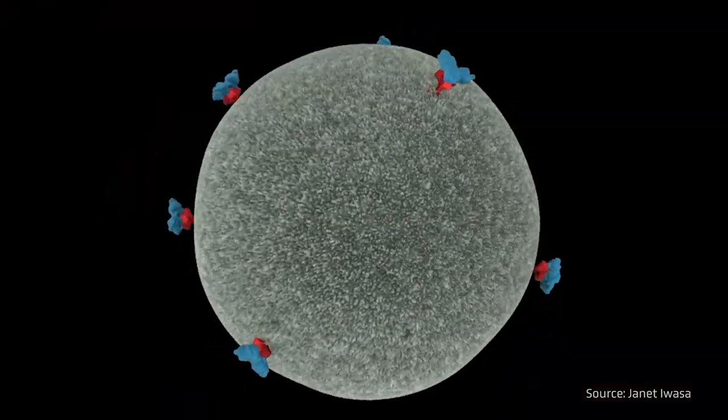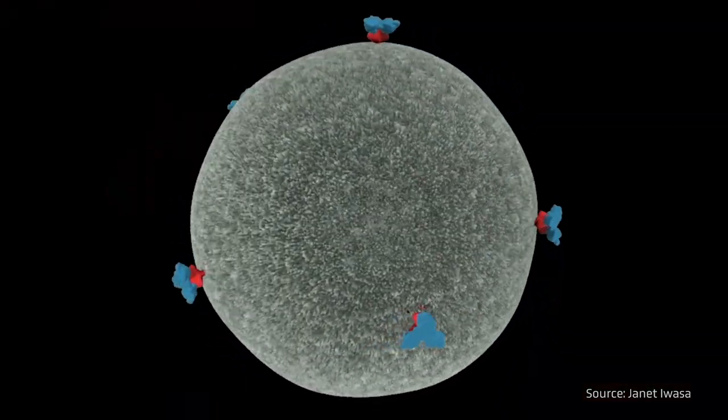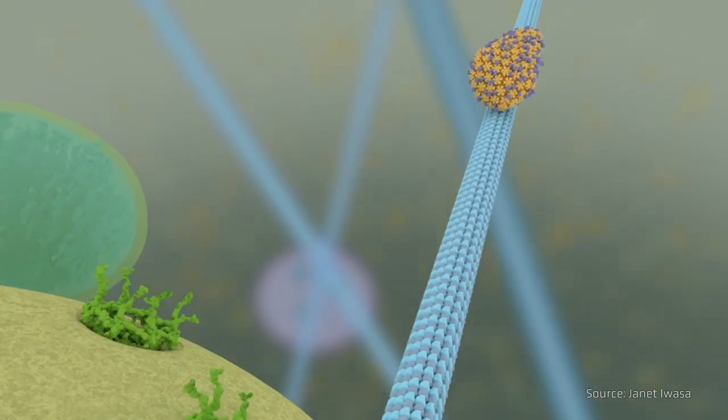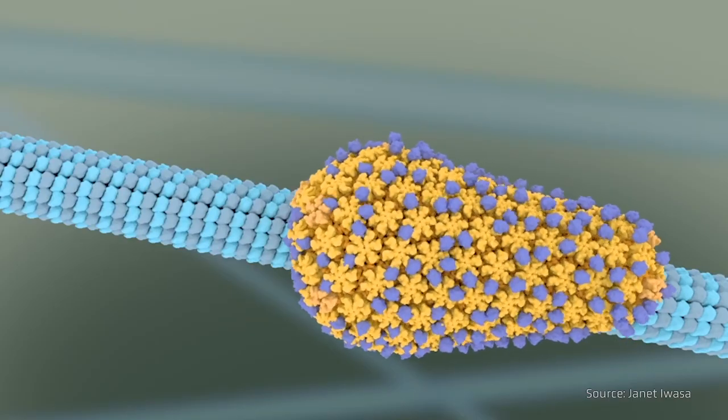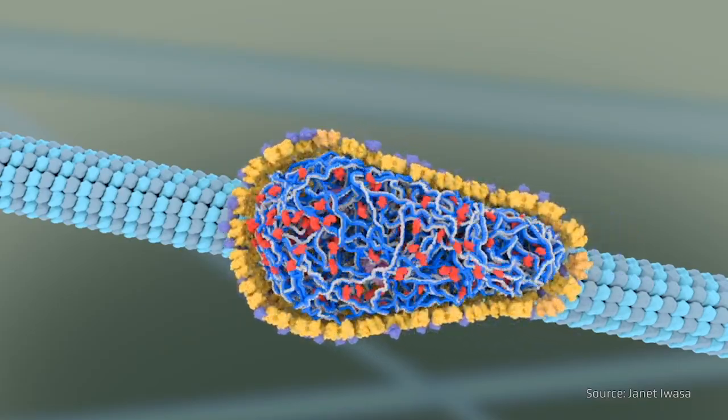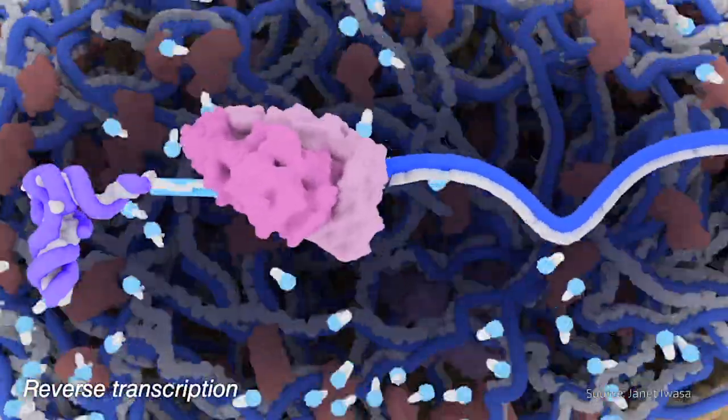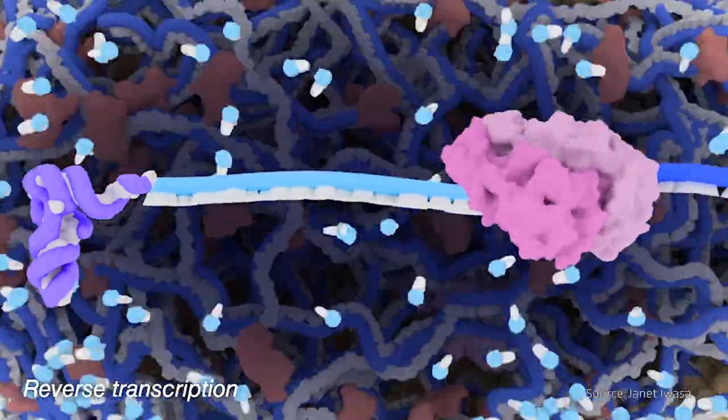As supercomputers got more powerful, they began to be useful to biophysics researchers as well. One of the ways these researchers use these computational microscopes is to observe how viruses like HIV, HPV, polio, and influenza function on a mechanical level at the resolution of individual atoms. These dynamics would be impossibly small and fast to observe through an optical microscope.